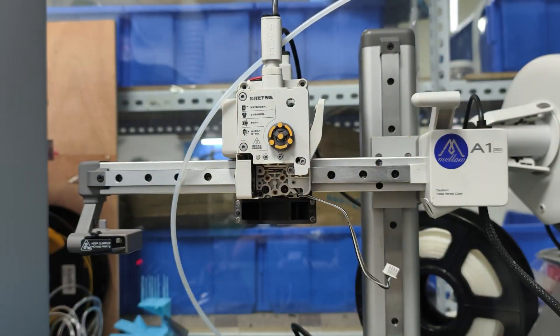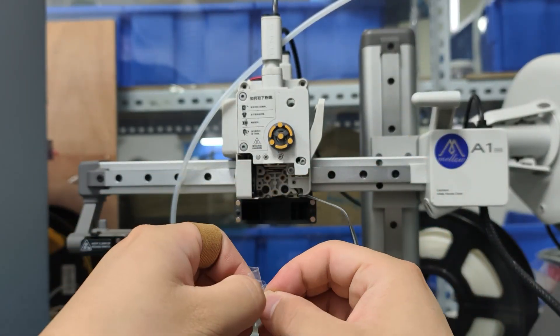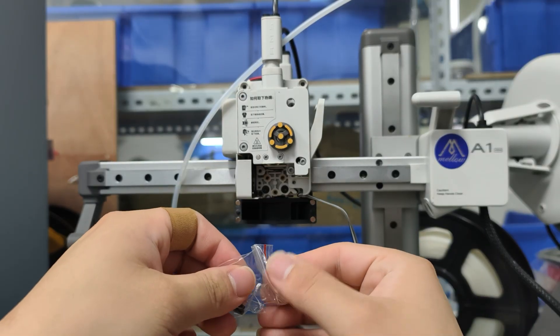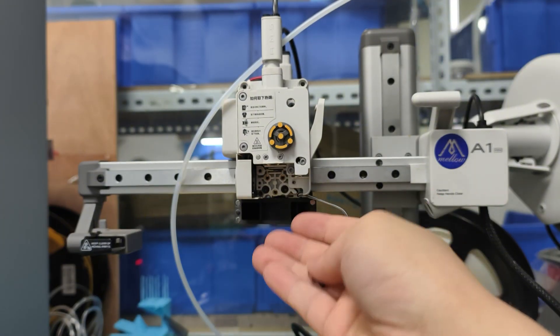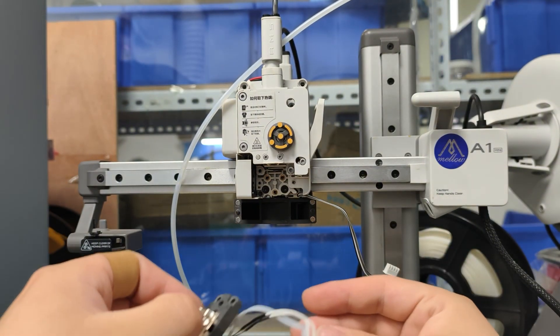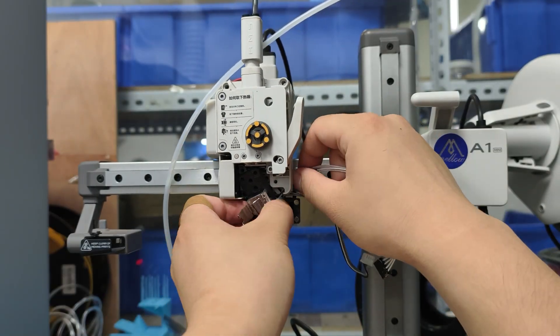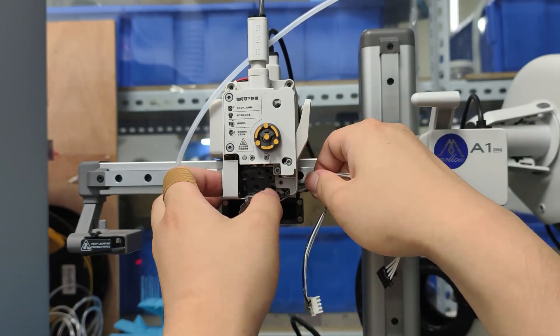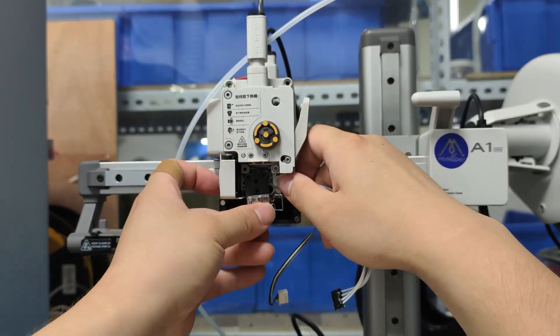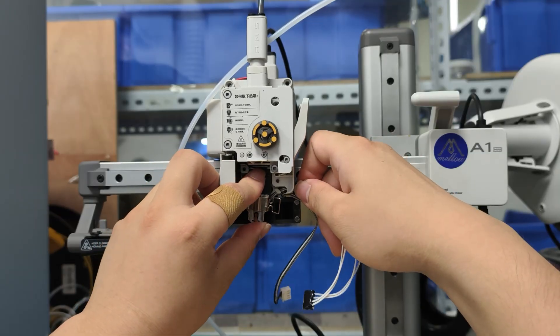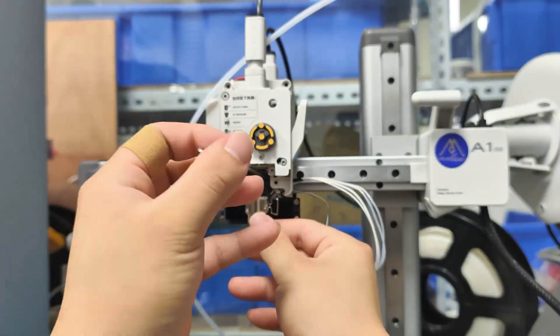Now we'll take out the A1 mount. We'll be using the screws that came in the package. Let's go ahead and screw those mounting bolts back on.